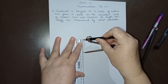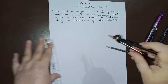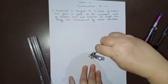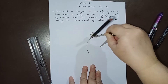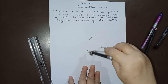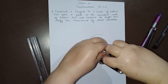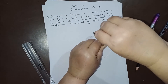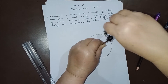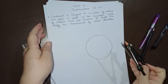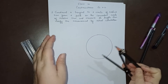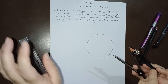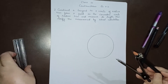We draw the circle, and the radius of this circle is 4 centimeters. So this is a circle of radius 4 centimeters. Now, from a point on the concentric circle of radius 6 centimeters — we have to draw another circle which is concentric to this circle.